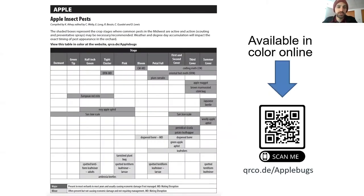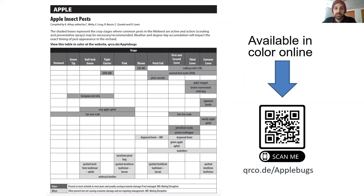The first thing you'll see when you open up the Apple chapter is the Apple insects pest chart. And here you'll see all the main or major Apple insects that we see each and every year. Major insects in the Apple chapter are those insects that occur pretty much every year in every single orchard across the region — you can pretty much count on them being found in your orchard.